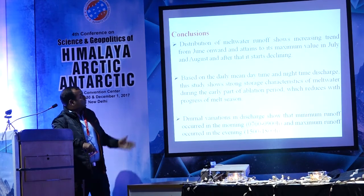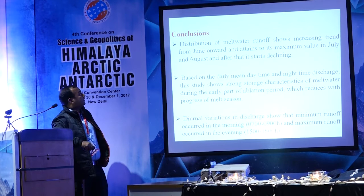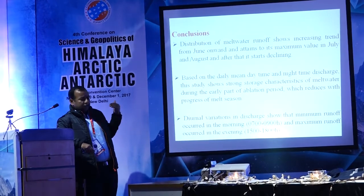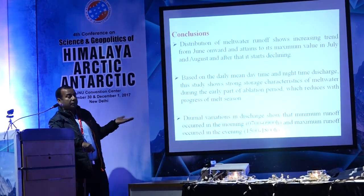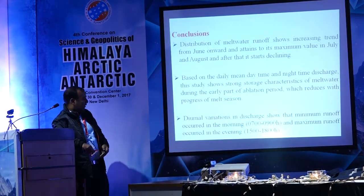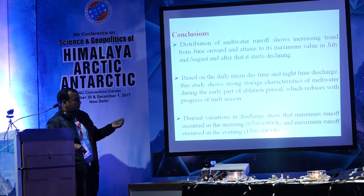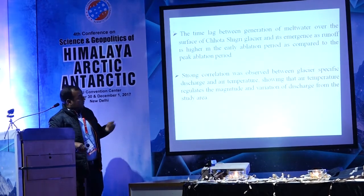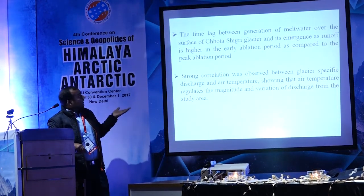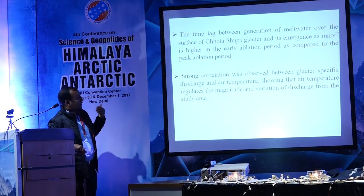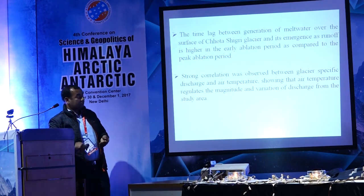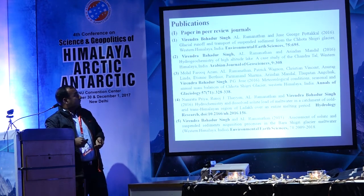In conclusion: the distribution of melt water runoff shows an increasing trend from June onwards. Storage characteristics are high during the beginning of the melt period and low during the peak melt period. Minimum discharge is observed during morning time around 7 to 9 AM, and maximum discharge is observed during evening time around 4 to 6 PM. The time lag is high during the early part of the melt period and low during the peak melt period. A strong correlation is observed between glacier discharge and temperature over the surface of Chhota Sigiri Glacier. This is my list of publications.